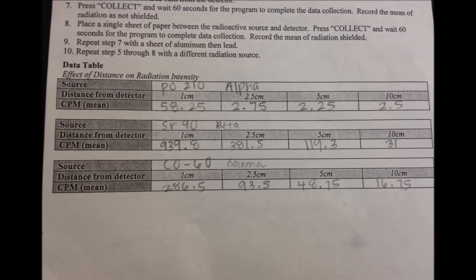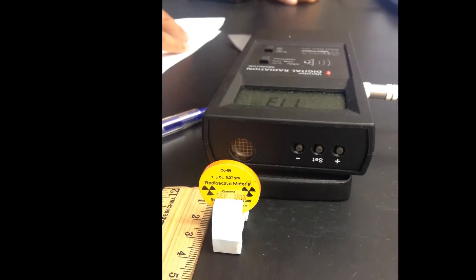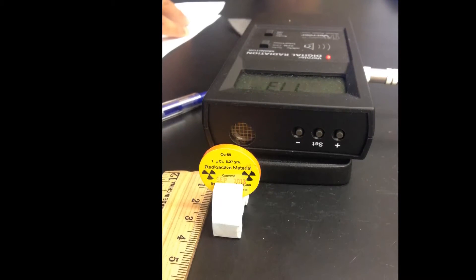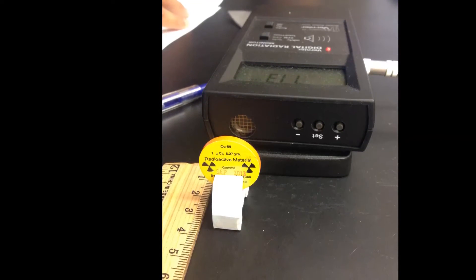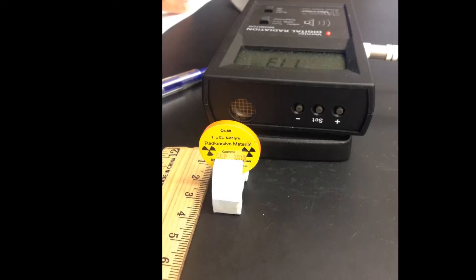Each source was measured at a distance of 1, 2.5, 5, and 10 centimeters away from the detector. The mean CPM calculated from the Logger Pro program was recorded after 40 seconds from each distance for each of the three radiation sources.